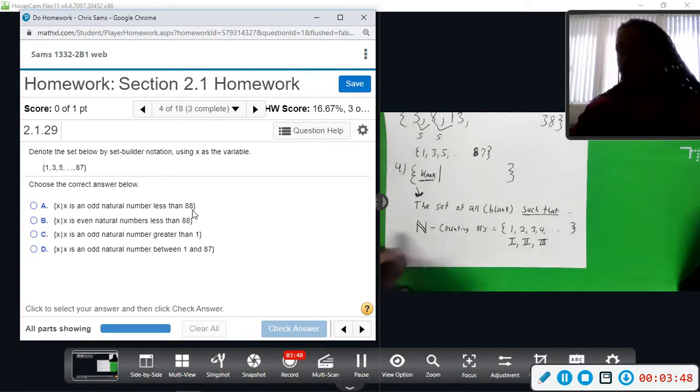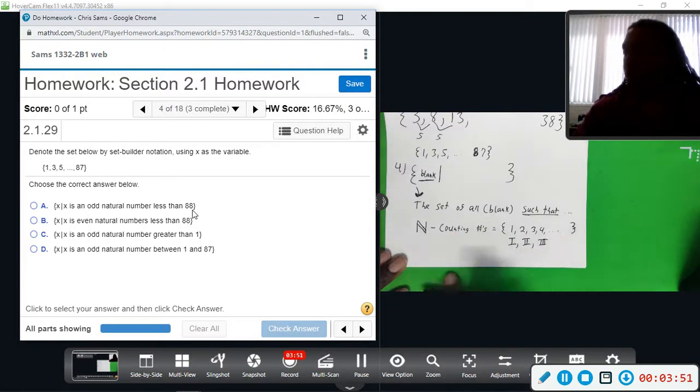When they say natural numbers, they're talking about whole positive numbers. We're restricted to odd numbers and less than 88. And that does fit this criteria, so it looks good.